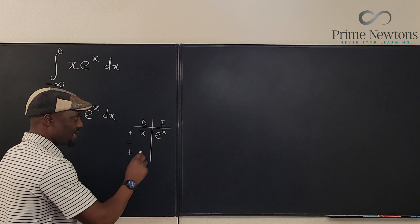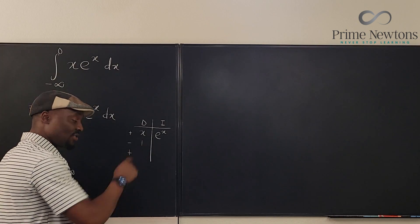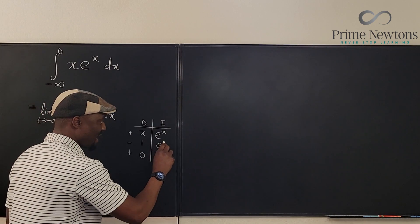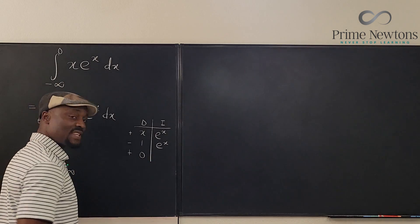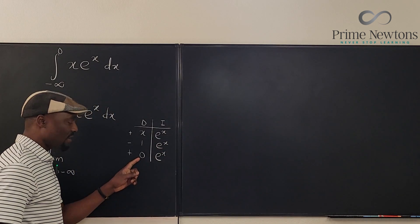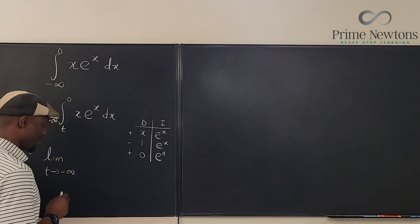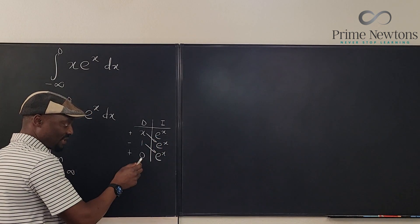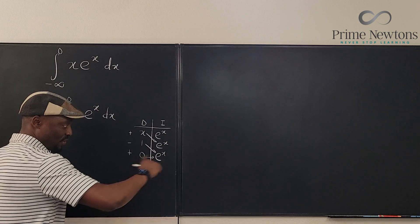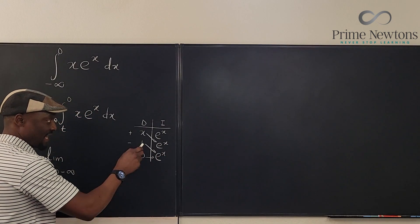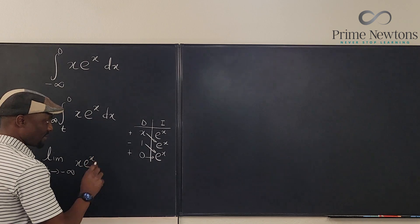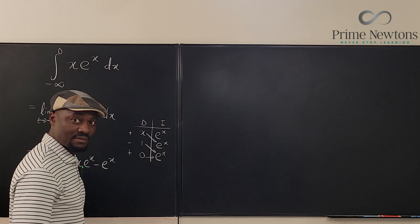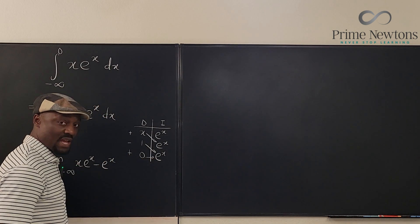If I differentiate x, I get 1. If I differentiate 1 one more time, I get 0. If I integrate eˣ, I get eˣ, and integrating again gives eˣ — it's perpetual. But I stop when I reach 0. Multiplying diagonally gives x·eˣ minus eˣ, since 0 times eˣ is 0.